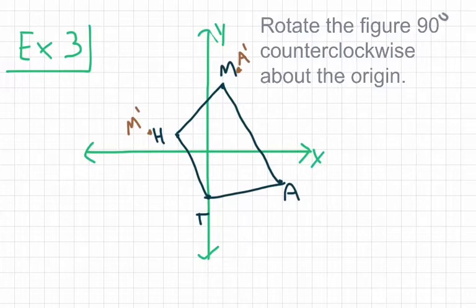Next, we move on to point T. Originally, point T is at the coordinates 0, negative 3. And when we rotate it 90 degrees counterclockwise, T prime ends up at 3, 0. And I label that point T prime.